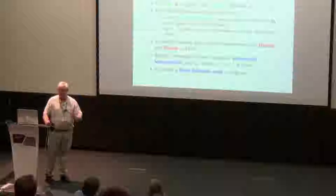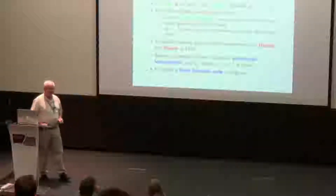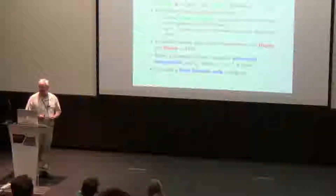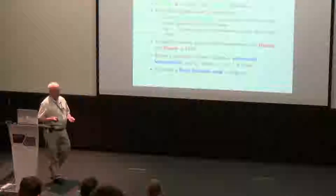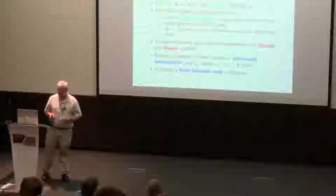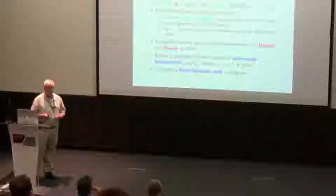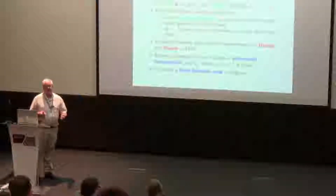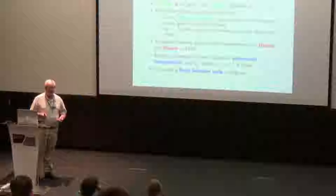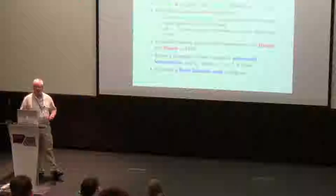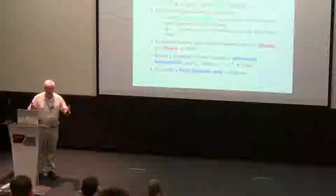This is actually not very relevant for the rest of the talk, but just to establish a little background. There's this notion of a (T, N) threshold scheme, where T and N are positive integers with T ≤ N. T is the threshold. The idea is that there's some secret K — maybe an element of a finite field — and it's split into N shares s₁ through sₙ. If you have any T out of the N shares you can reconstruct the secret, but if you have T minus one or fewer shares you have no information at all about the secret.